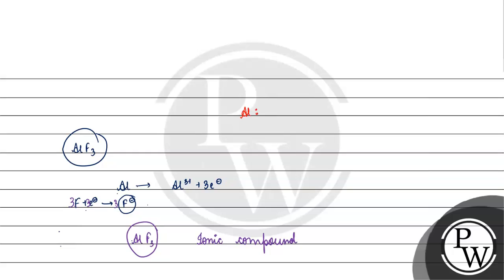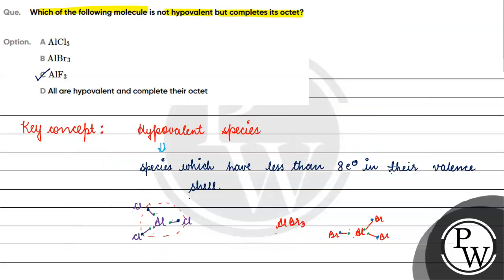Looking at aluminum's electron configuration: 1s² 2s² 2p⁶ 3s² 3p¹. If aluminum exists as Al³⁺, its configuration becomes 1s² 2s² 2p⁶, meaning its octet is complete. In this case, the octet is complete and it is not a hypovalent compound. So the correct answer for this question is Option C. I hope you understood it well — thank you and all the best.